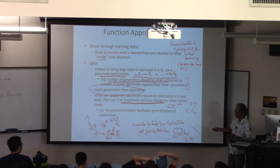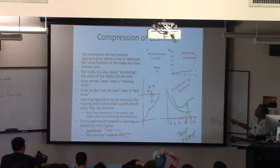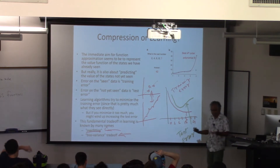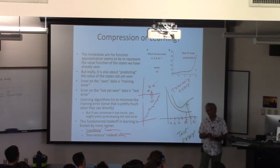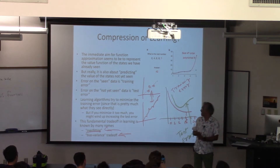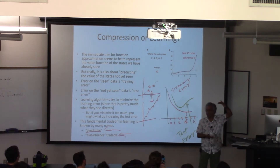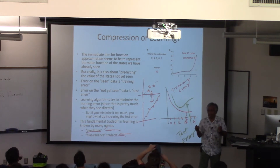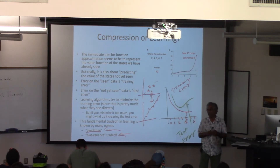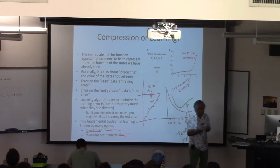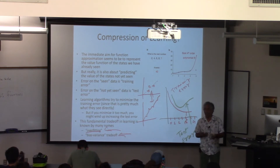We looked at how function approximation works and the difference between compression and learning, which are extremely close. In compression, you're interested in losslessness on the training data. In reinforcement learning, that means coming up with a feature-based representation and a function that takes features and exactly predicts values such that predictions agree with pretty much every state — no error whatsoever. That's analogous to converting an image to JPEG, where you're trying to reduce error with respect to the original image data.